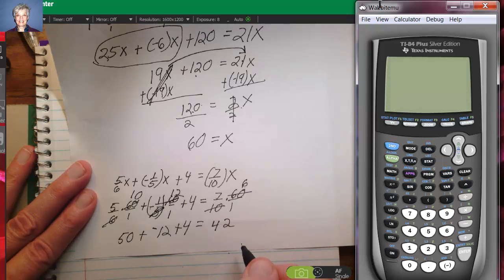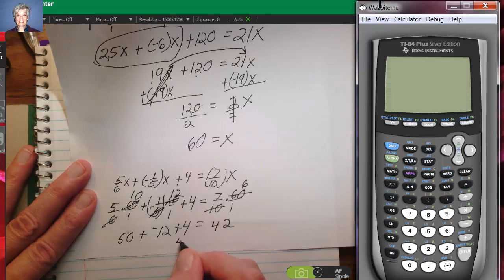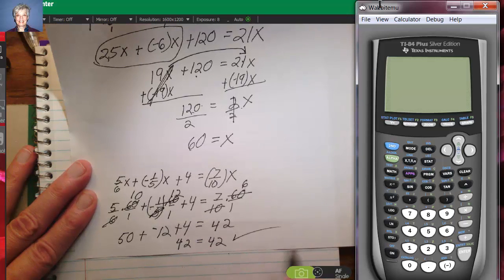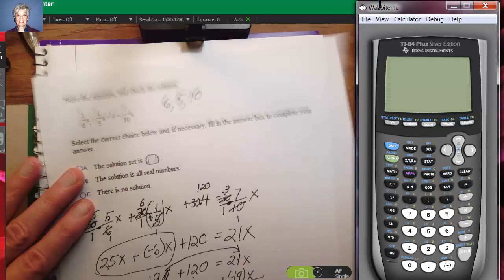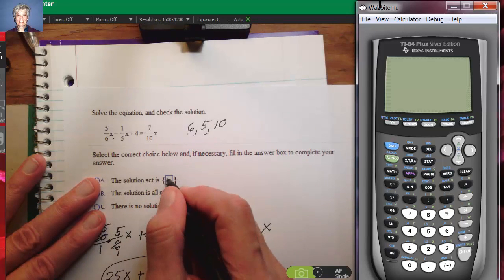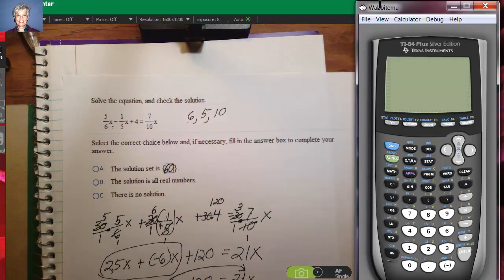Now, 50 minus 12 is 38 plus 4 is 42, so we have 42 equals 42. That's true, so 60 really is my answer, and back in my math lab, I would put 60 in the answer box.